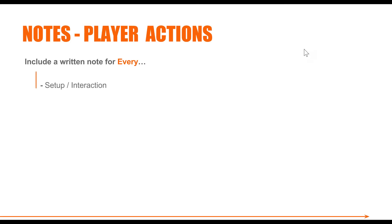For every interaction, every setup, include a note. Every event that you have to script, every scripted event should have a note. Every cutscene, every time you want the camera to pan or transition — be careful with these. Don't have them all over the place. I encourage you to stick to one cutscene where the camera or the player's position would be moving.